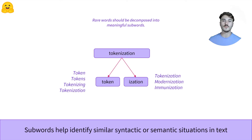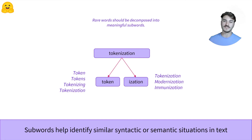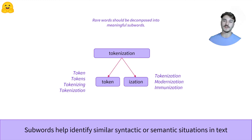In turn, the model will now be able to make sense of "token" in different situations. It will understand that the words token, tokens, tokenizing, and tokenizations have a similar meaning and are linked. It will also understand that tokenization, modernization, and immunization, which all have the same suffixes, are probably used in the same syntactic situations.